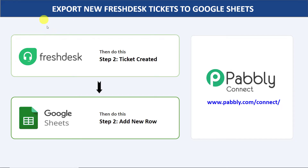Hello everyone. In this video, we will learn how to automatically export new Freshdesk tickets to Google Sheets. The idea is that if I create a new ticket in Freshdesk, the data of that particular ticket will be added into Google Sheets automatically.